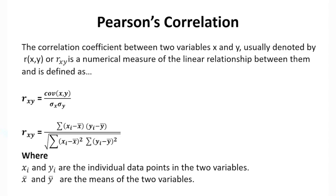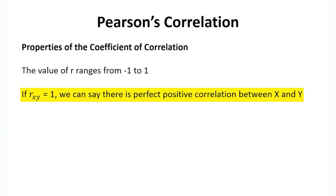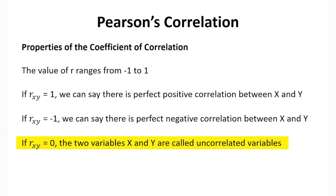The first property of the Pearson's correlation coefficient is that it always ranges from negative 1 to positive 1, inclusive. When the value is exactly equal to 1, there is a perfect positive correlation between x and y. When the value is equal to negative 1, there is a perfect negative correlation. When the value is 0, the two variables are called uncorrelated. These are extreme cases — getting an exact 1, negative 1, or 0 is an extreme possibility; you would often have values somewhere in the range between negative 1 and 1.